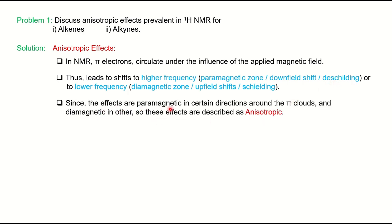Since the effects are paramagnetic in certain directions around the pi cloud and diamagnetic in others, you have different environments in the same molecule. We describe this as anisotropic, meaning unequal — somewhere you have paramagnetic, somewhere you have diamagnetic. So it is called anisotropic.